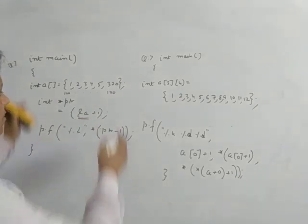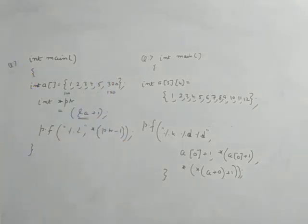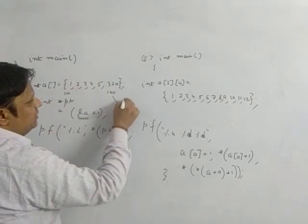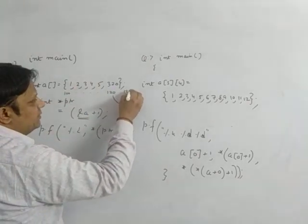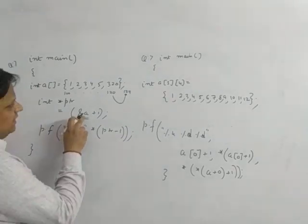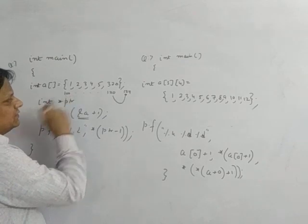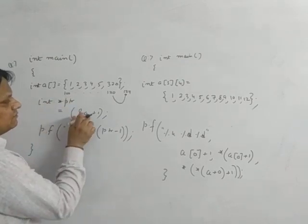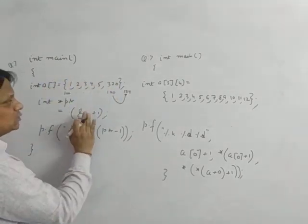Address of A, I am talking about this entire 1D array. Plus 1 means, after this, we move to the next element, next address location which starts from 124. If you have written A, A means what base address of your 0th element. But you are writing address of A means, complete 1D array plus 1.